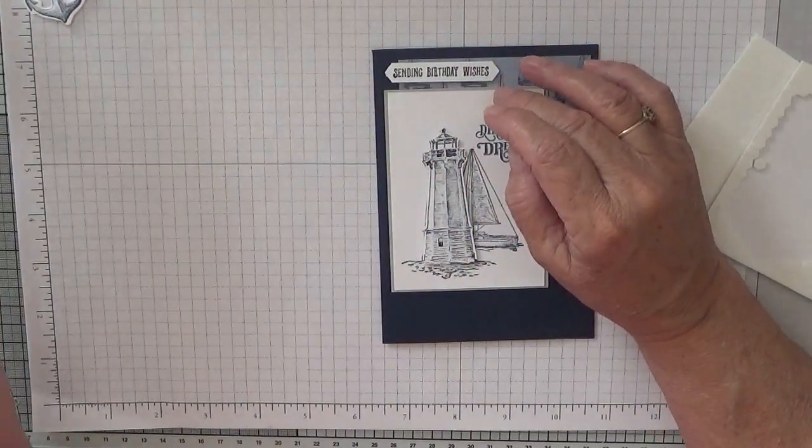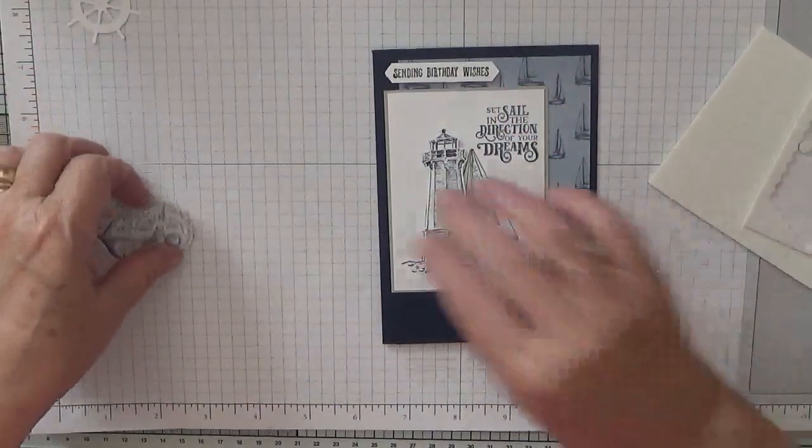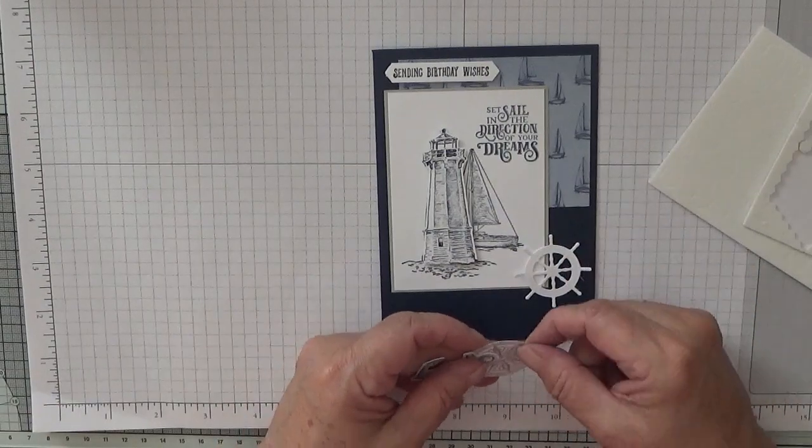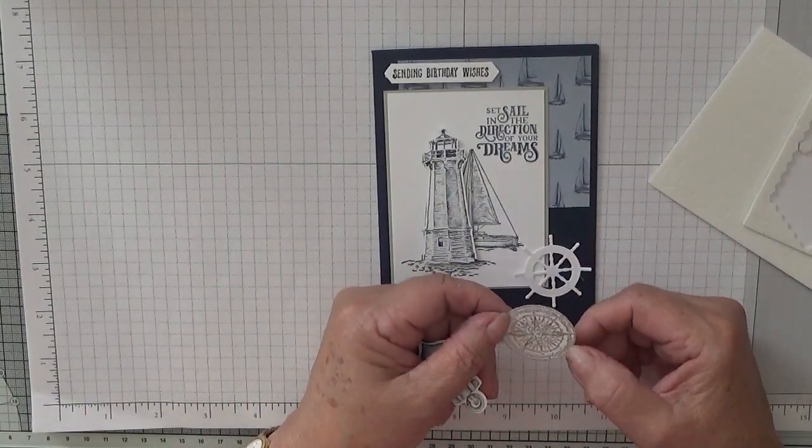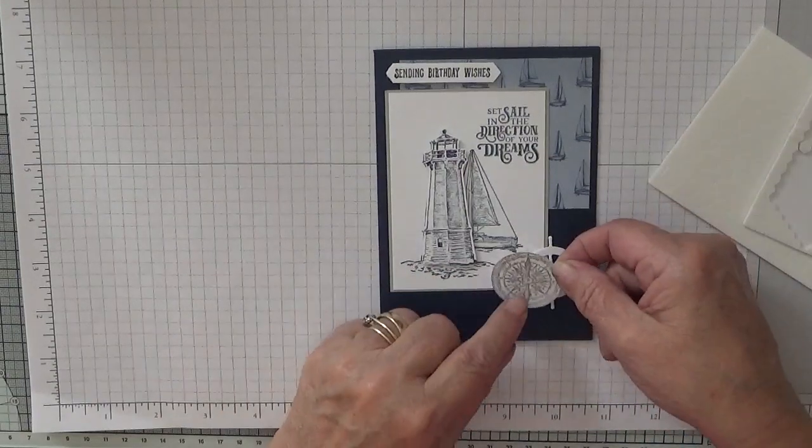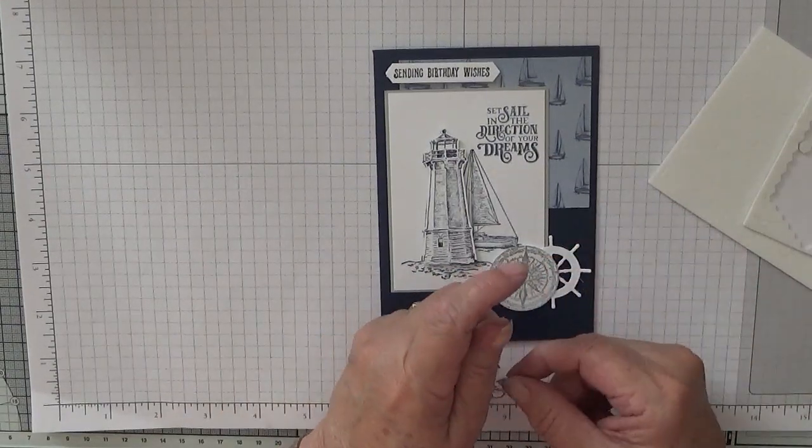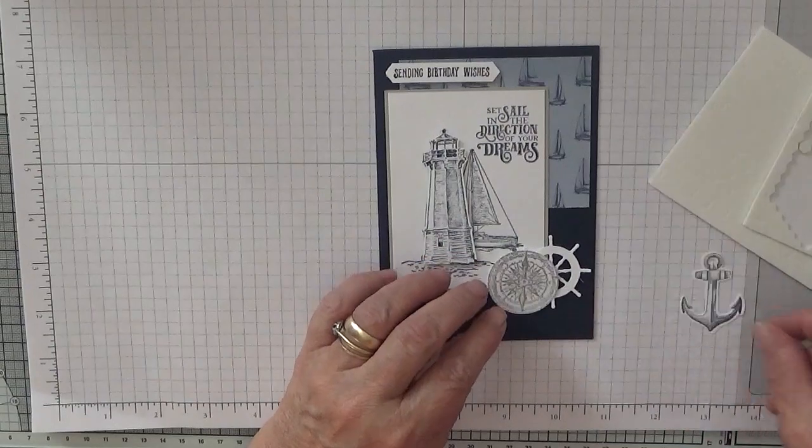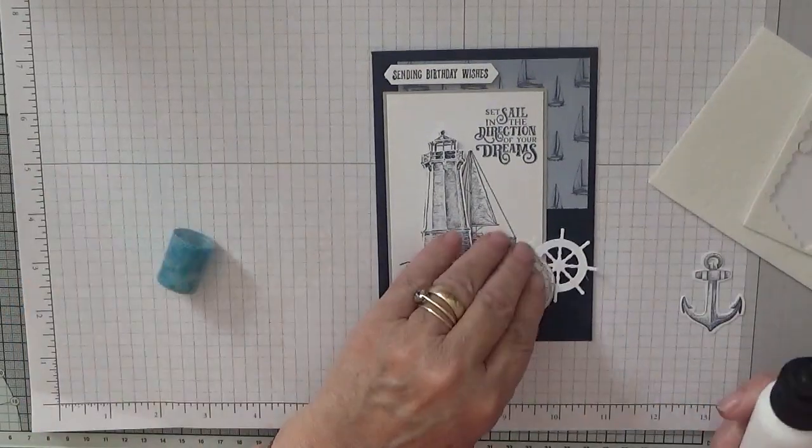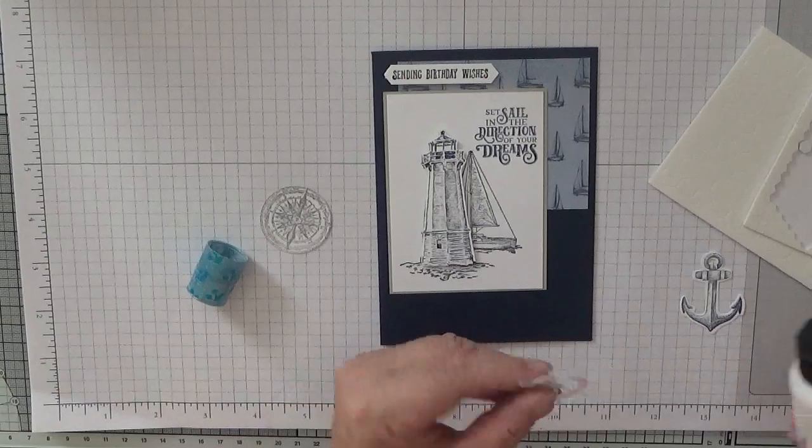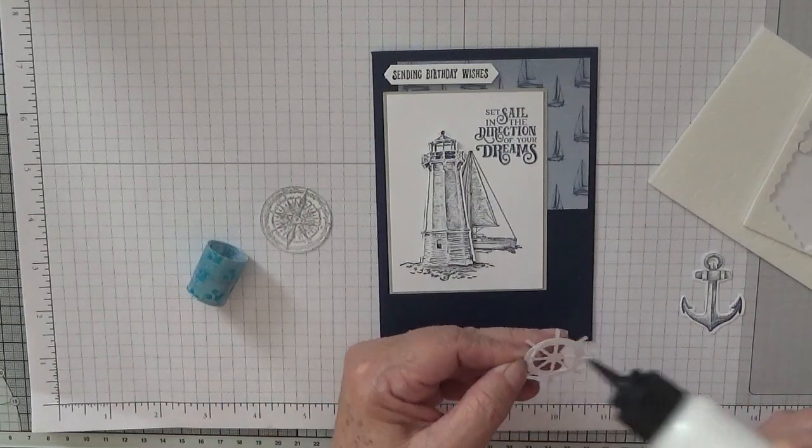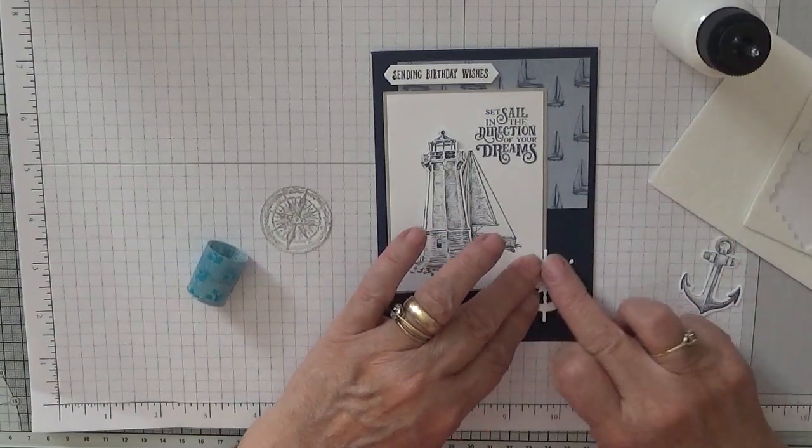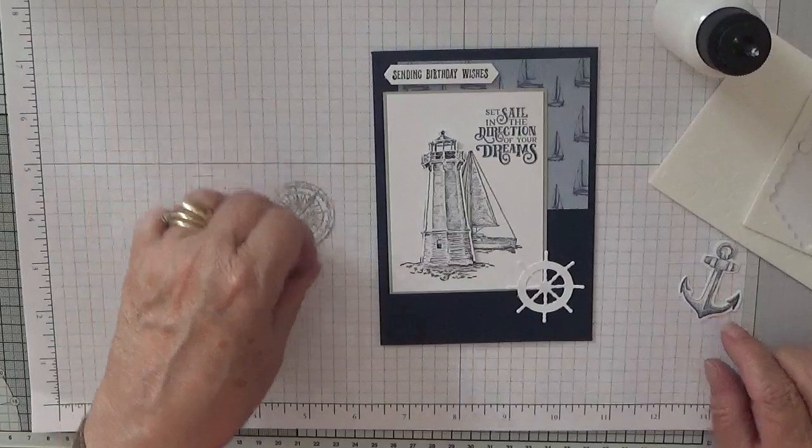And then the compass. Try and get it the right way so that's east, so that needs to go that way. And then the anchor. I am actually going to glue the wheel down as that would be easier. Then I am going to put three dimensionals on the compass.